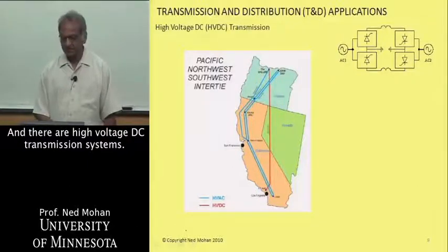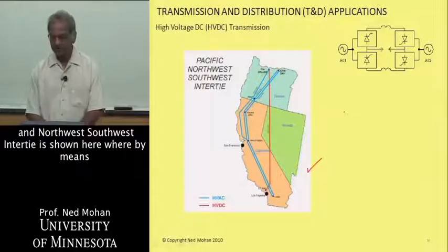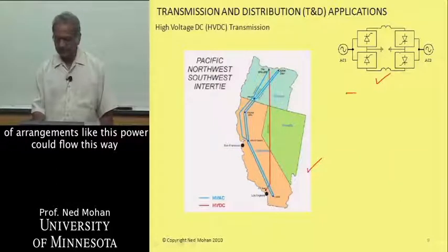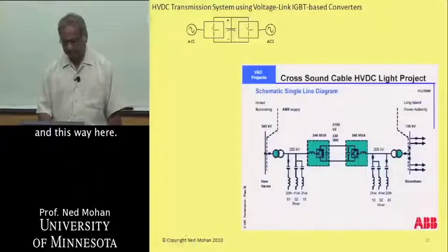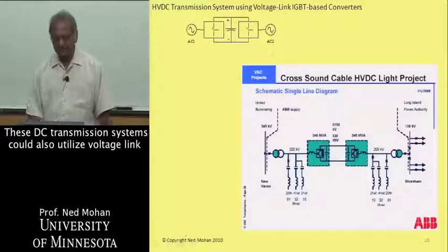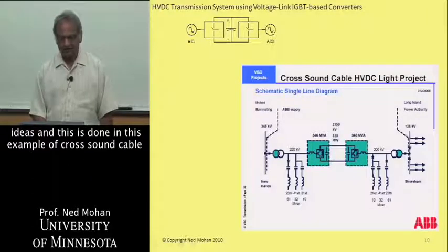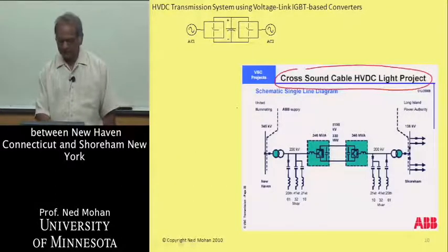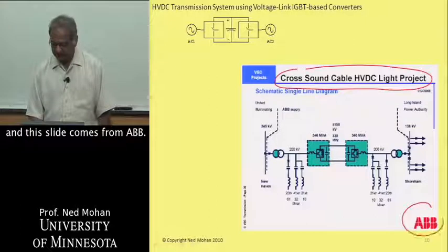There are high-voltage DC transmission systems. One example is the northwest-southwest intertie shown here, where power can flow bidirectionally. These DC transmission systems can utilize voltage link concepts, as demonstrated in the cross-sound cable between New Haven, Connecticut, and Shoreham, New York. This slide comes from ABB.